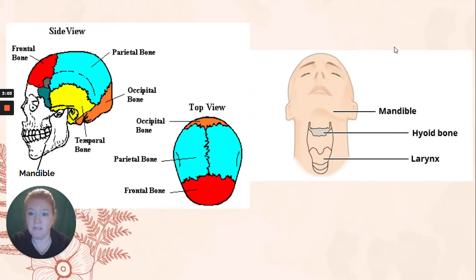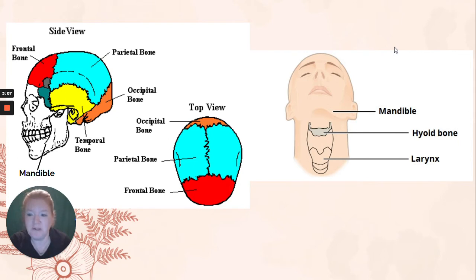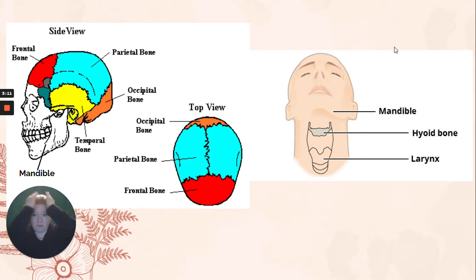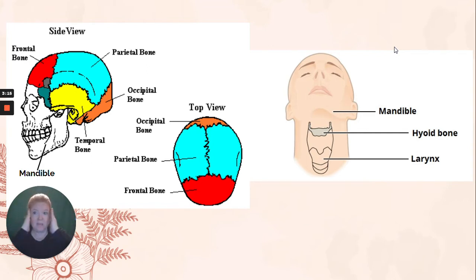Okay, the skull. Also remember here you have the hyoid bone tucked under your mandible. We have the frontal bone, parietal, occipital, and temporal.